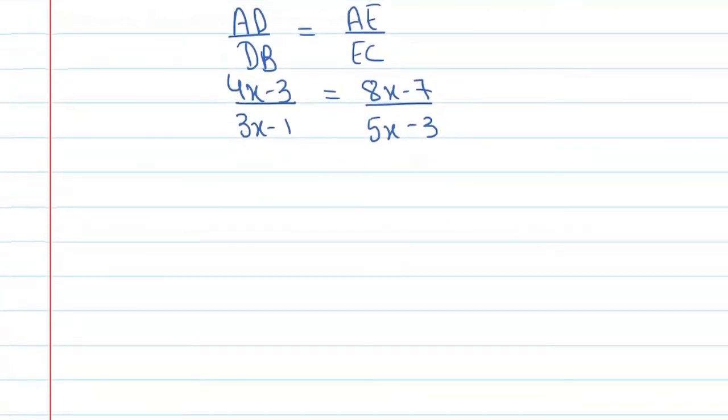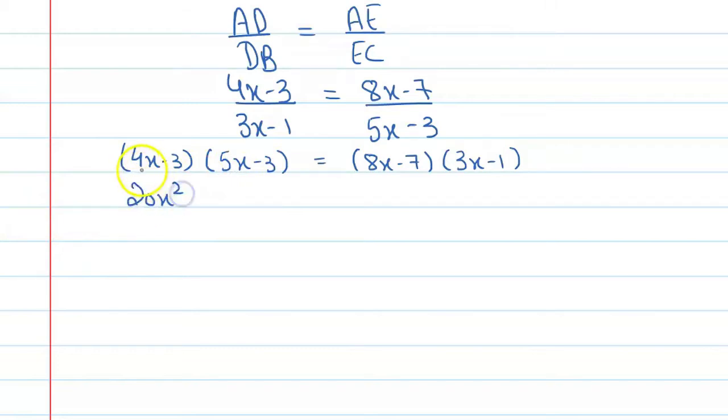If we cross multiply, then after simplification it becomes 4x minus 3 into 5x minus 3 equals 8x minus 7 into 3x minus 1. Okay. Now when we multiply 4x by 5x we get 20x square, 4x into minus 3 gives minus 12x, minus 3 into 5x gives minus 15x, plus 9. Again, 8x into 3x is 24x raised to power 2, this is minus 8x, this is minus 21x, plus 7 on multiplying minus 7 with 3x minus 1.